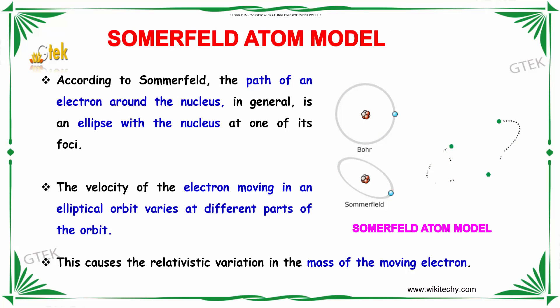We will talk about Sommerfeld atom model. According to Sommerfeld, the path of an electron around the nucleus in general is an ellipse with the nucleus at one of its foci.